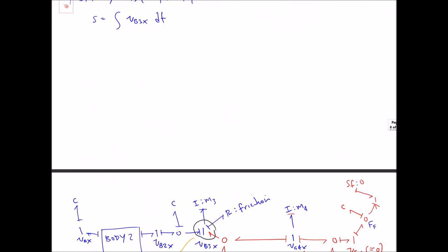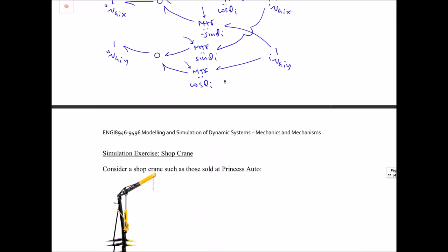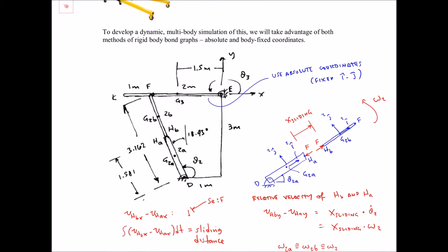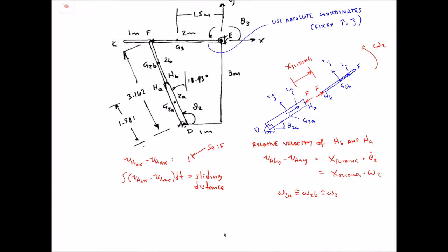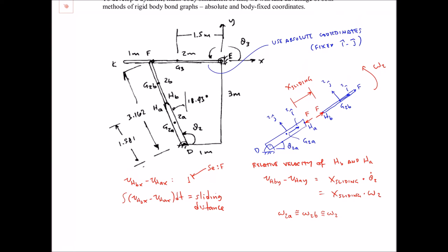For the part of the shop crane where there is a rotating sliding joint, use of body-fixed coordinates makes things a lot easier. The actuator — a rod inside a tube — is split into two bodies: body 2a is the tube, body 2b is the rod, each with a center of gravity, a mass, and an inertia. For the tube part, I'm going to define a hinge point D which will be fixed to the reference frame.